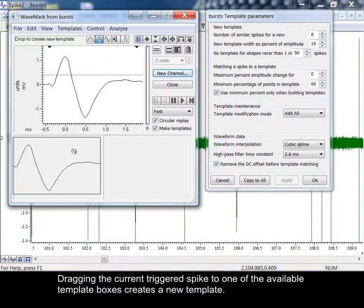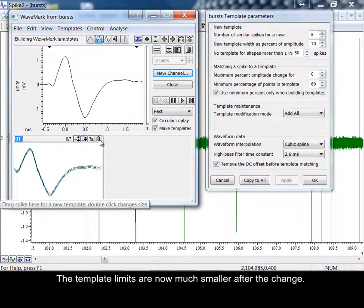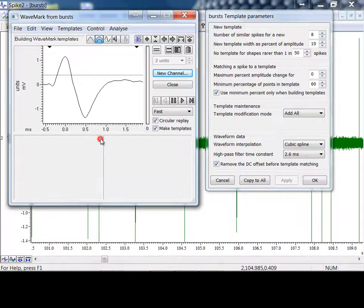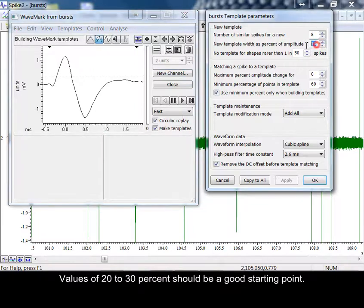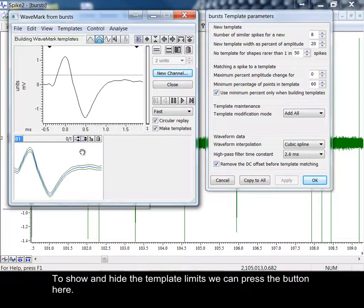Dragging the current triggered spike to one of the available template boxes creates a new template. The template limits are now much smaller after the change. Values of 20% to 30% should be a good starting point. To show and hide the template limits, we can press the button here.